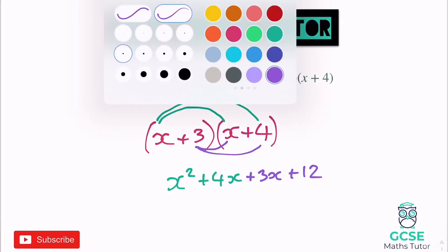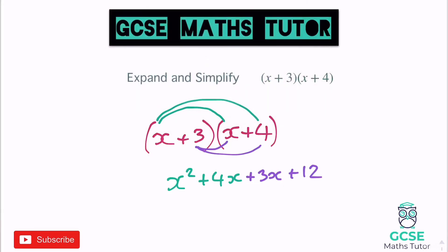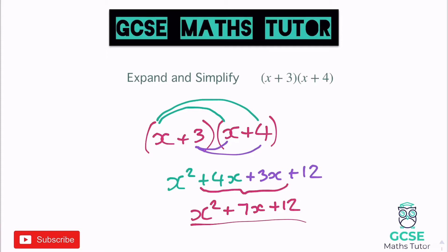All we've got to do now is simplify it, because these two middle pieces are like terms — they're both x terms. So we keep x squared as it is, add together 4x and 3x to get 7x, and then plus 12. And that's your brackets expanded and simplified — this is called a quadratic.